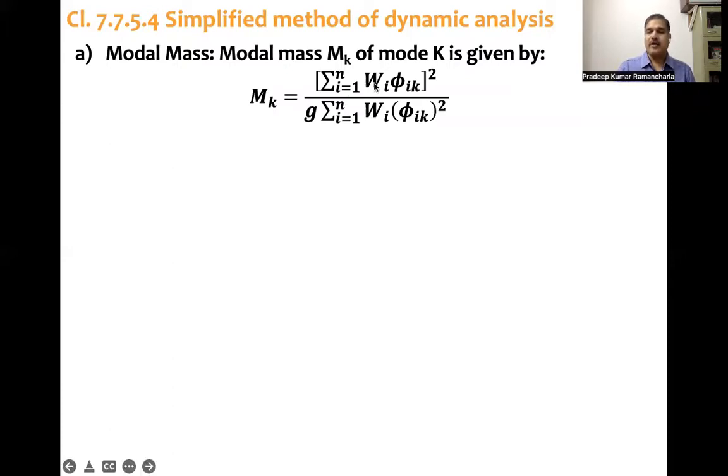In the numerator, wi φik, where φ is the mode coefficient, mode shape coefficient at ith level kth mode. So wi φik whole square, summation of it and whole square divided by g summation i from 1 to n, n number of floors, wi φik φik square.